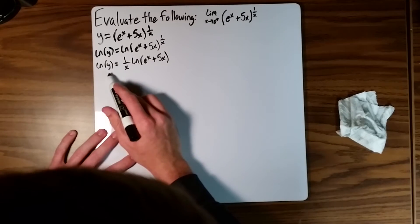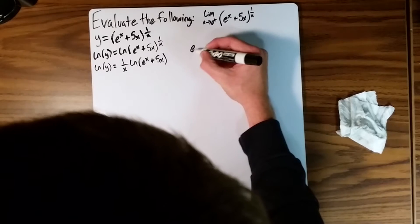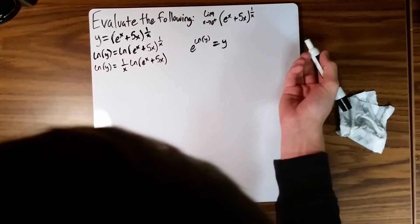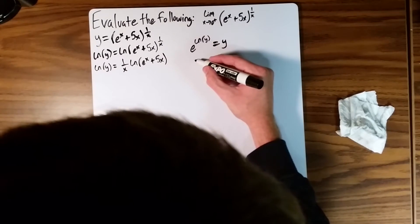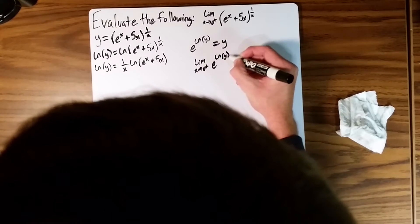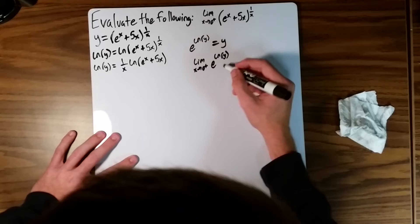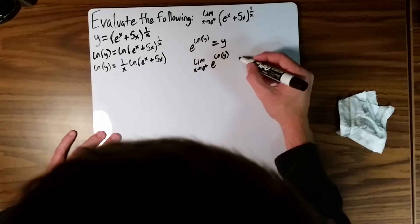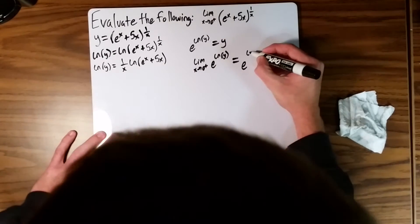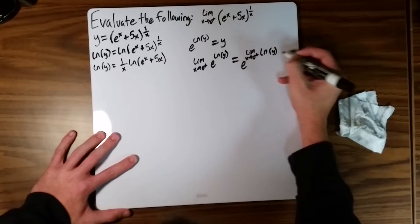When we're done we're going to have to do something to evaluate this natural log of y, so let me explain how that works. Since e to the natural log of y equals y, the limit as x approaches 0 from the right of e to the natural log of y equals the limit as x approaches 0 from the right of y, which is what we want. Since e is a continuous function, we can pull the limit inside, rewriting it as e to the limit as x approaches 0 from the right of the natural log of y.